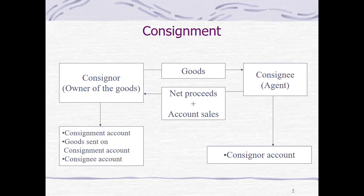The consignee will get a commission out of the sales of the goods, and will be deducting any reimbursable expenses — meaning expenses made by the consignee in behalf of the consigner relating to the consignment contract — and remitting the proceeds to the consigner.